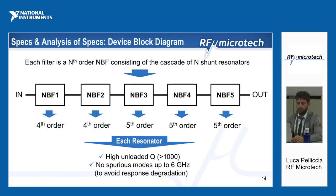Each filter is an N-th order notch band filter consisting of N shunt resonators. You can see the line with the five notched band filters and the order of filter necessary to fulfill the requirements in terms of rejection and transition bandwidth between the notched band and transmission band. The other important thing is the Q factor of the resonators, which must be above 1000 to achieve good rejection and a good transition bandwidth.